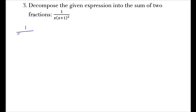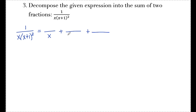Example 3 is a bit different. The denominator is 1 over x times (x plus 1) squared — this is an example of a repeated linear factor. The denominator really says x times (x plus 1) times (x plus 1), so x plus 1 appears twice. Since this denominator has three factors, I'll set up a sum of three fractions: something over x, something over x plus 1, and something over x plus 1 squared. I'll call the numerators a, b, and c.